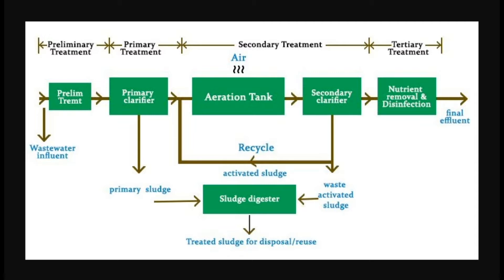Organisms that can only meet their energy needs with oxygen are called obligate aerobes. Bacteria that can use oxygen or nitrate as an electron acceptor in the absence of oxygen are called facultative aerobes. Organisms that generate energy by fermentation and can exist in an environment devoid of oxygen are obligate anaerobes. Organisms having the ability to grow in either the presence or absence of oxygen are facultative aerobes.